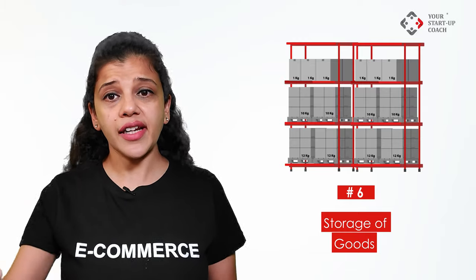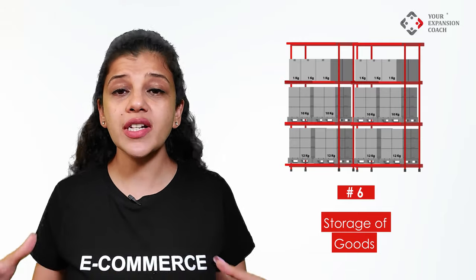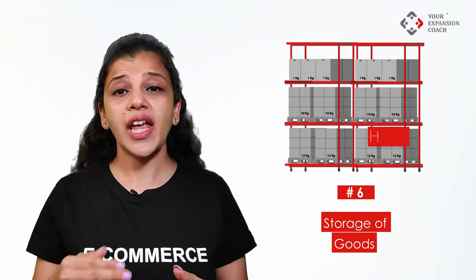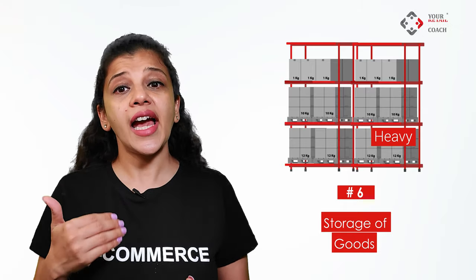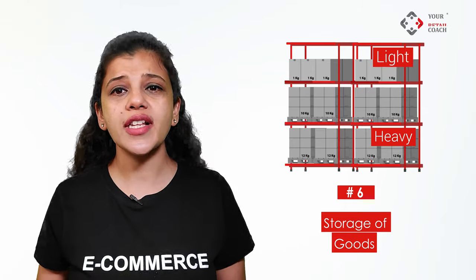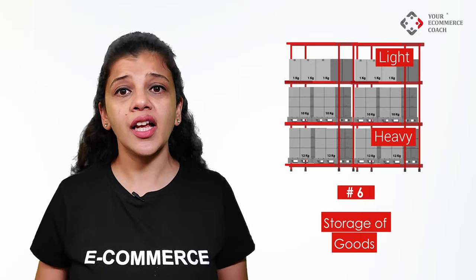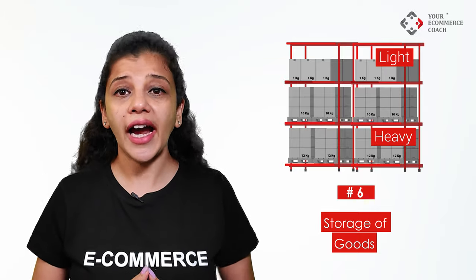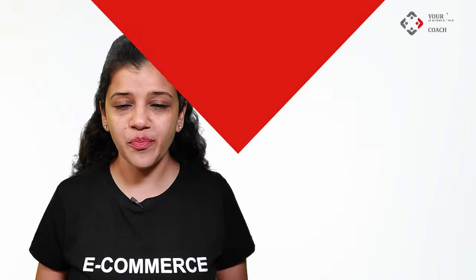Step six: storage of goods. To achieve faster TAT in deliveries, ensure you store fast movers at eye level, heavy goods at the bottom of the racks, and excess ordered goods or lightweight goods at the higher shelves of the racks. Plan the height of the shelves within the racks accordingly.